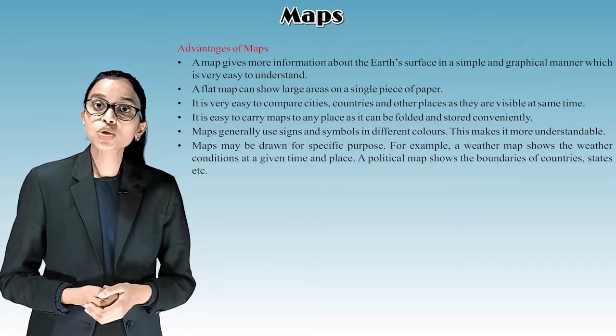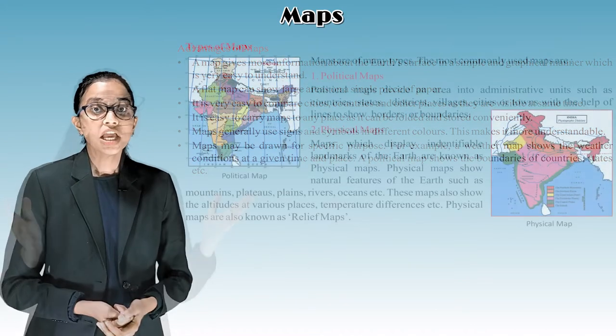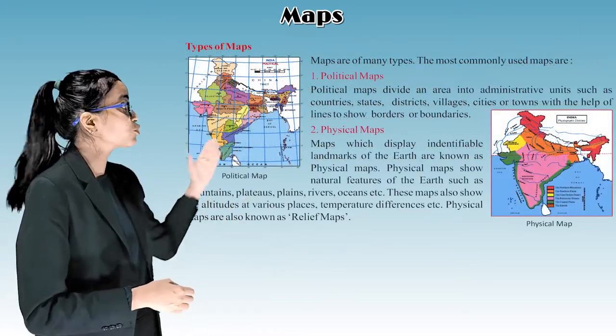a weather map shows the weather conditions at a given time and place. A political map shows the boundary of countries, states, etc. Children, let's see the types of maps.